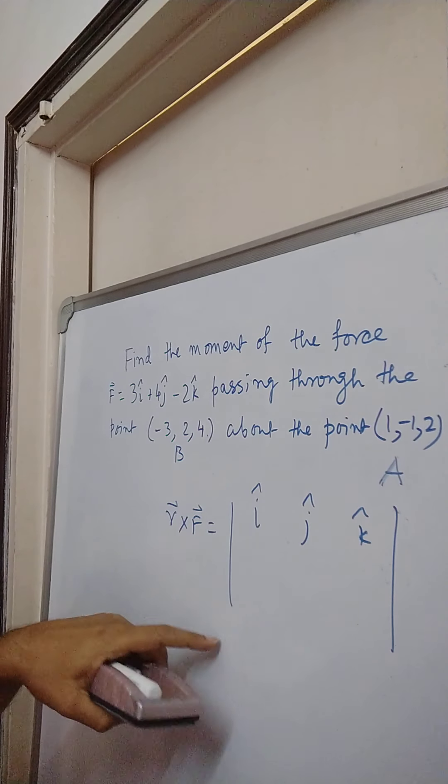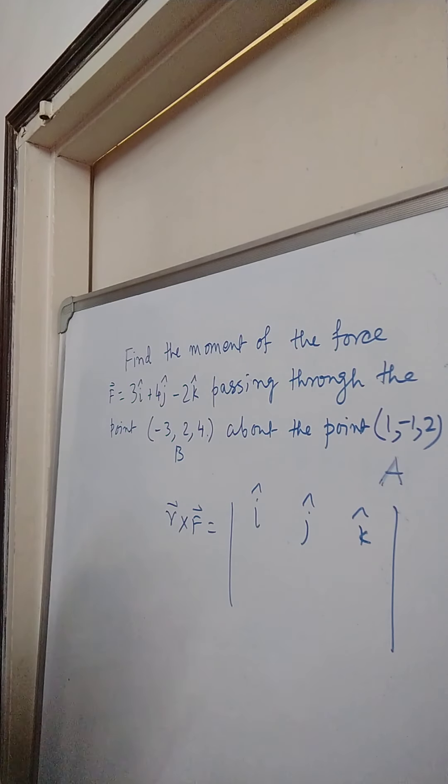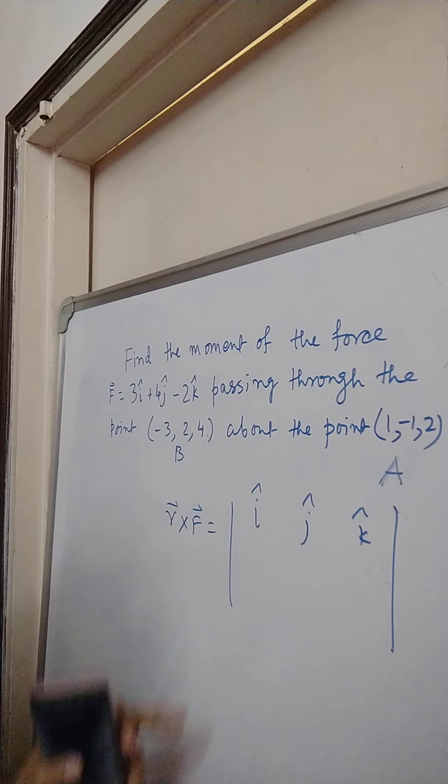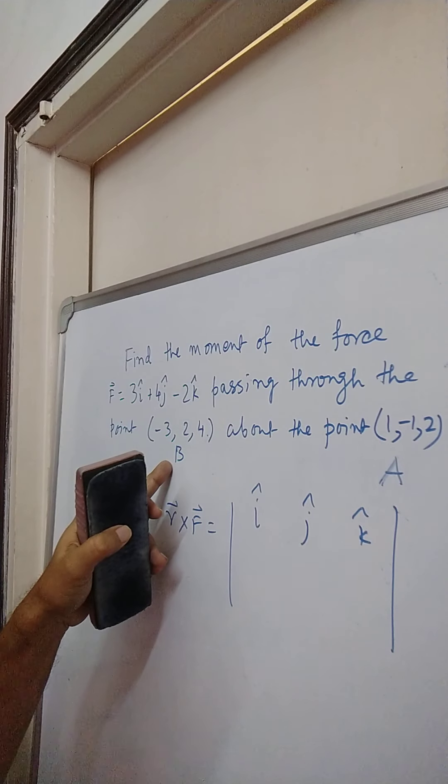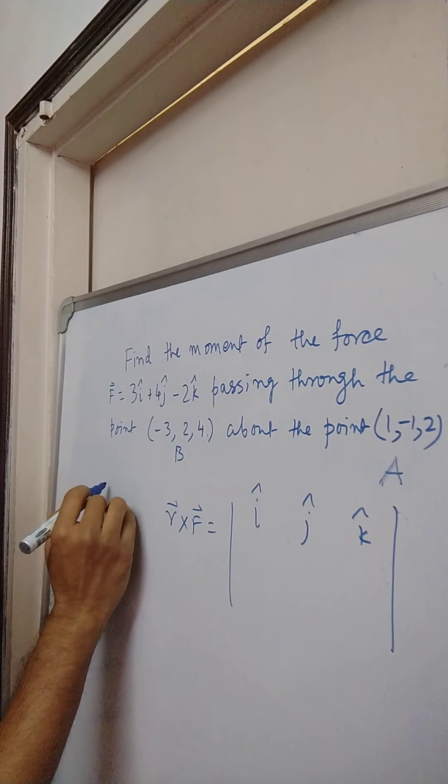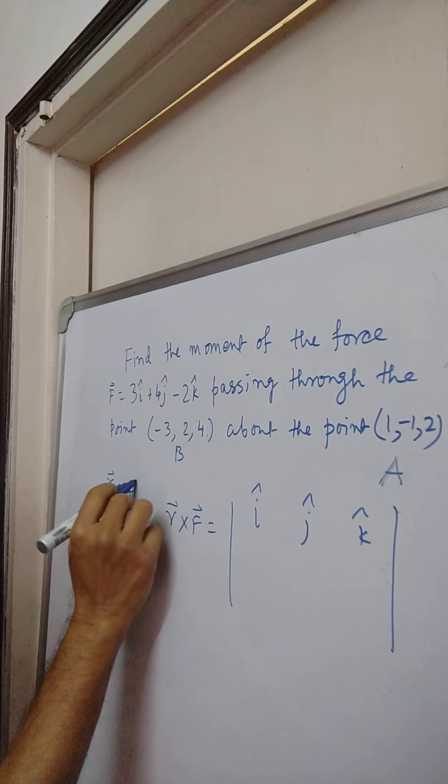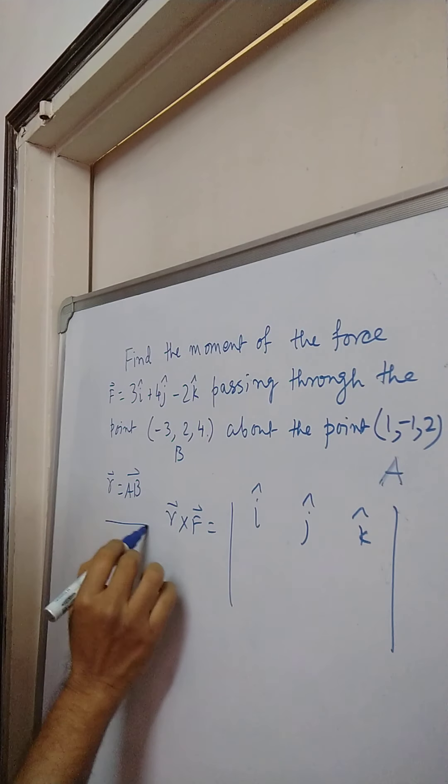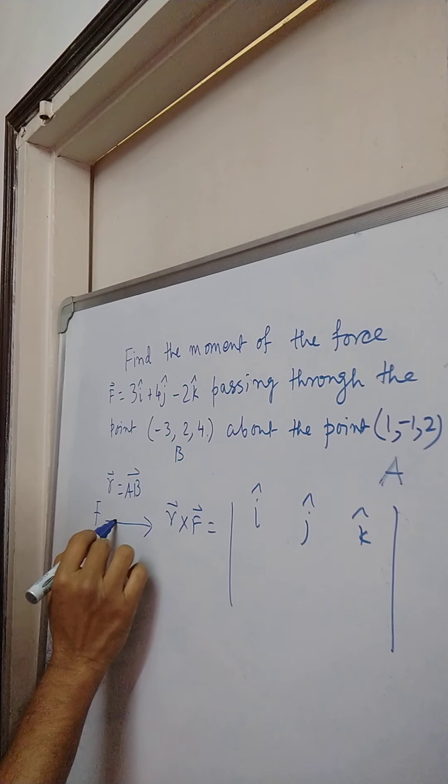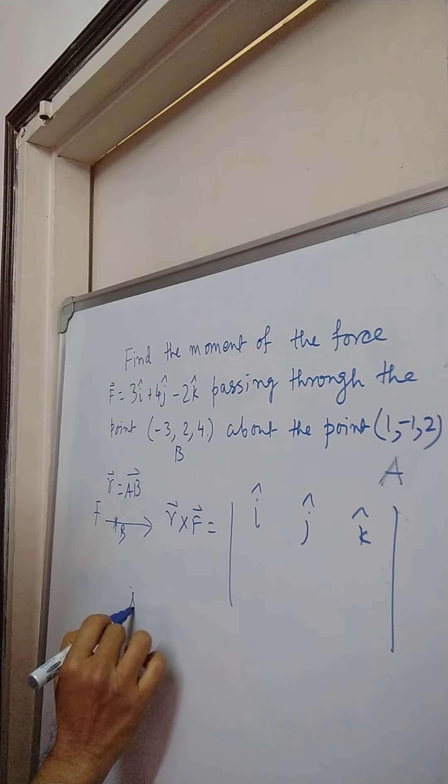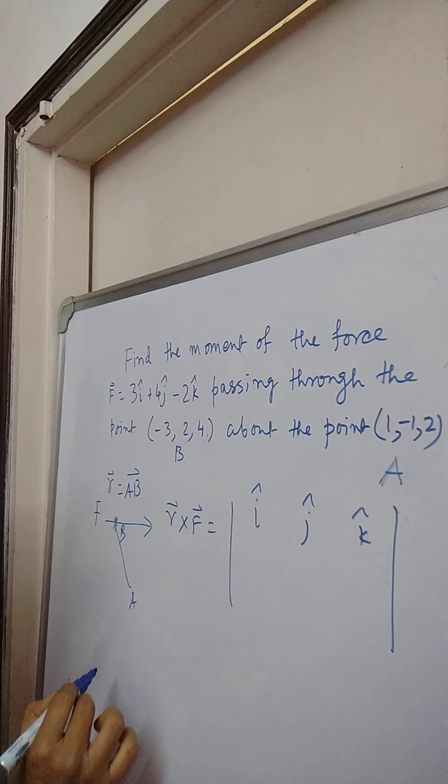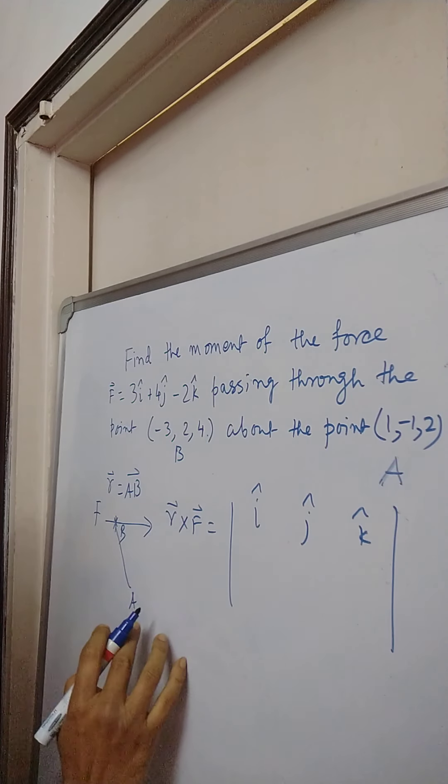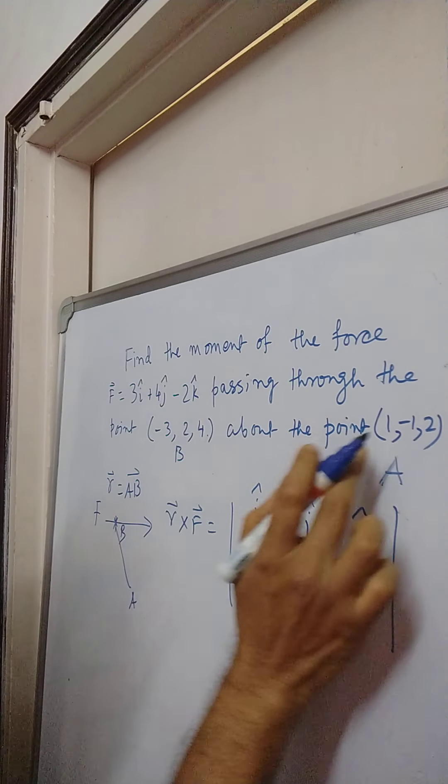This comes out to be, what is R? R is AB. I have calculated right now. AB means B minus A. The direction of the vector AB must be borne in mind because A is the point about which the moment is being taken. It is very important that R is actually AB not BA. Keep in mind.